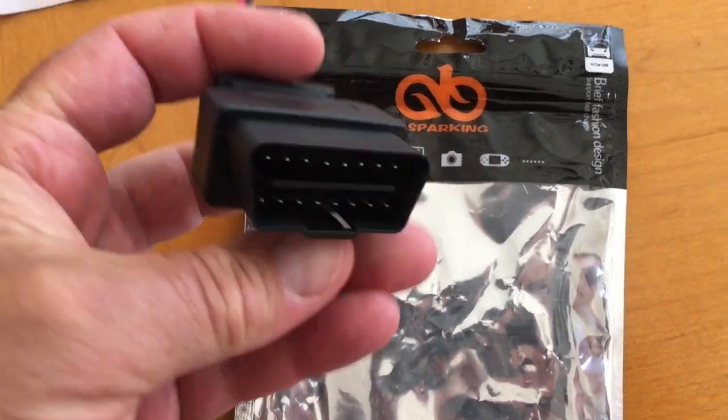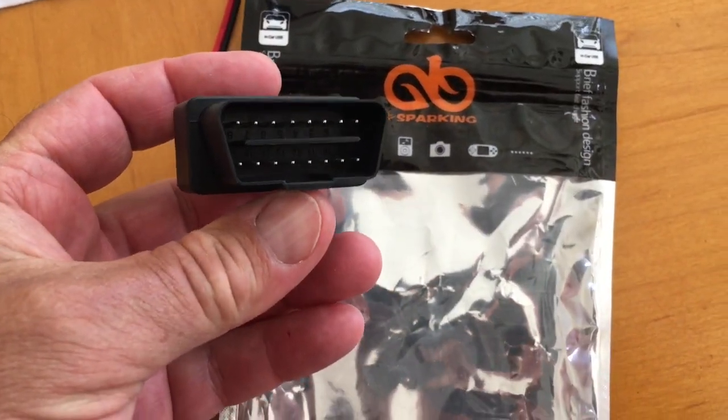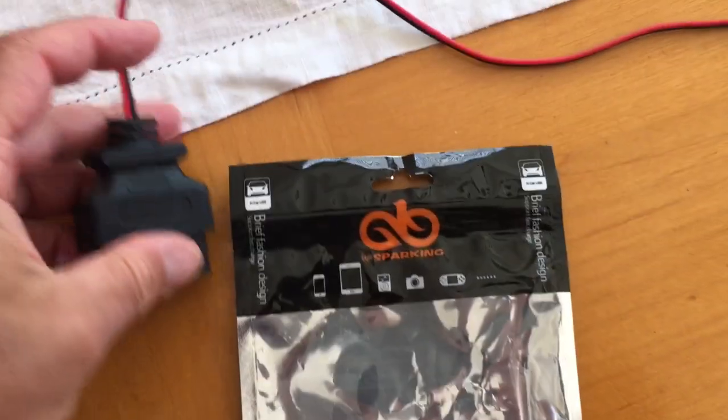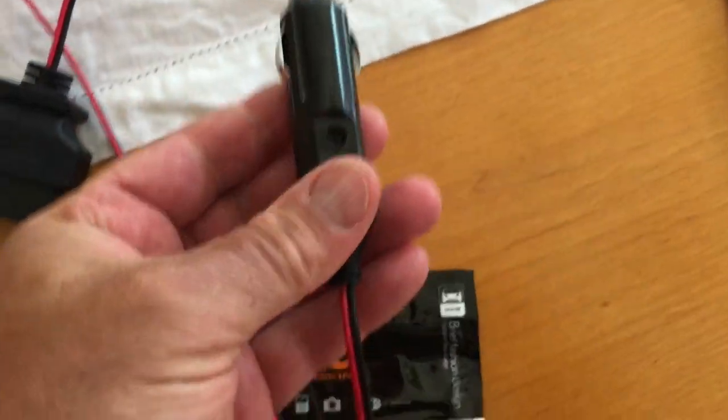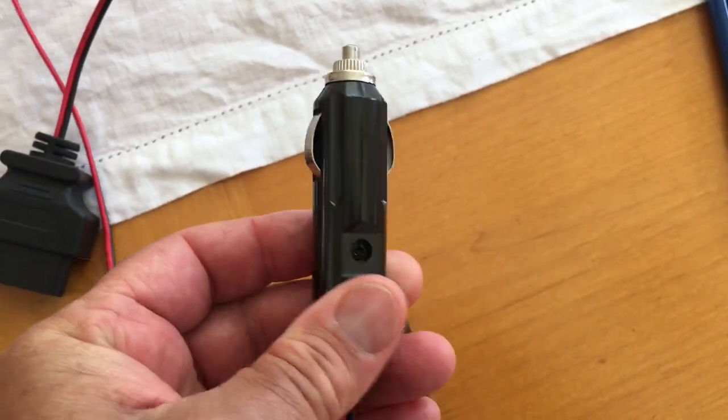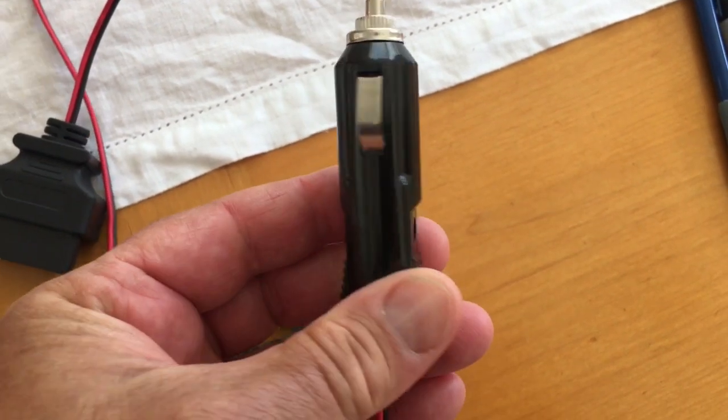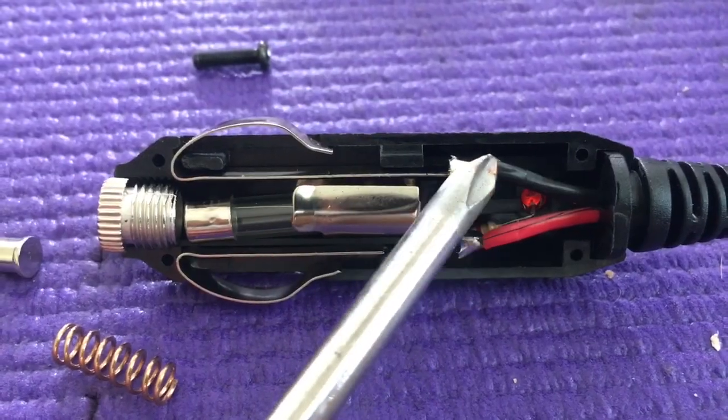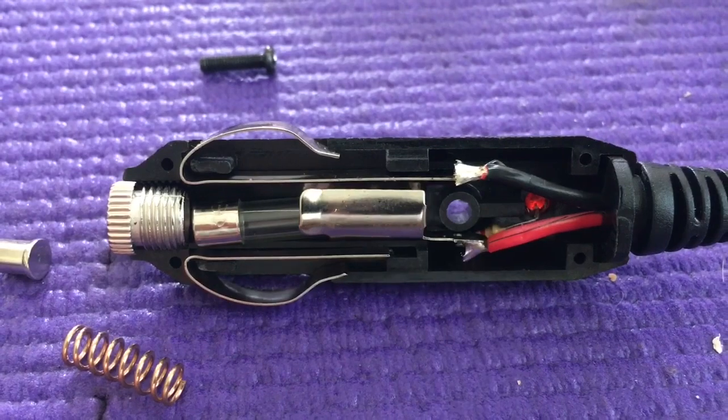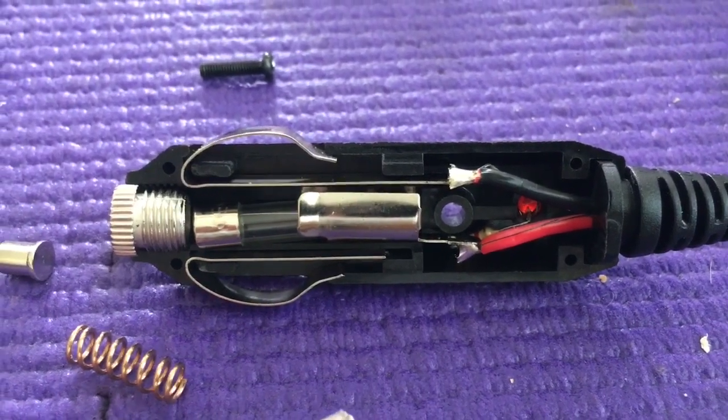The sparking module that I got, you can see it's got male pins and that's what you're going to need. And then it also has a cigarette lighter connection with an LED. I'm going to unsolder this and connect it directly to the solar panel.